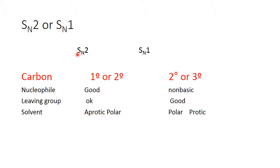With an SN2 reaction, you need to have a primary or secondary carbon because of the steric hindrance that would result from a tertiary carbon — we can't have a tertiary carbon undergo SN2. Secondary is slow, but it does proceed in a reasonable amount of time. With SN1, the carbon has to be secondary or tertiary, because a primary carbocation is unstable, and if you force it by heating, what's going to happen is probably carbocation rearrangement. So we don't really like using primary carbons in SN1 reactions.